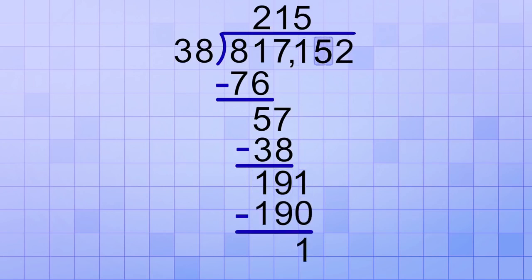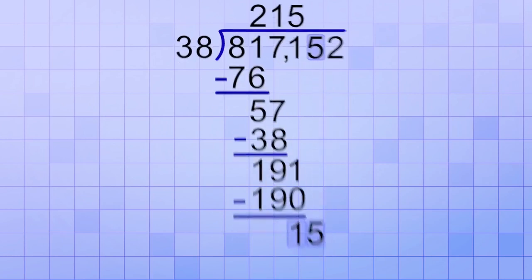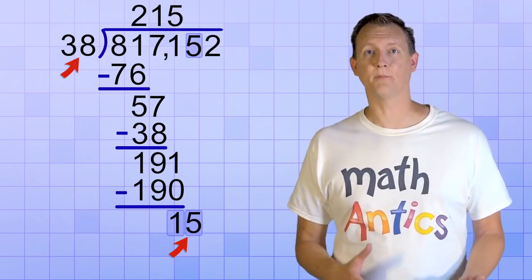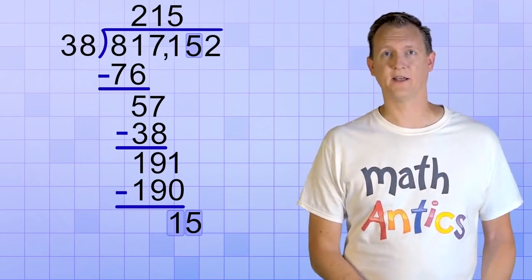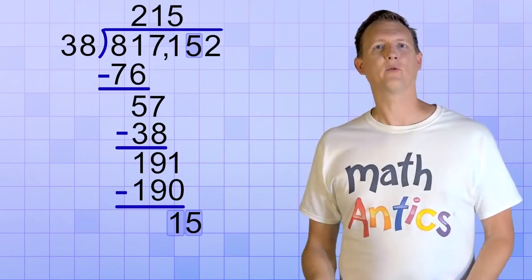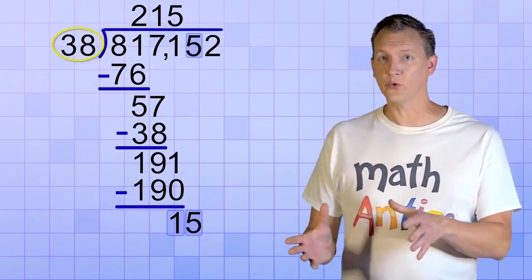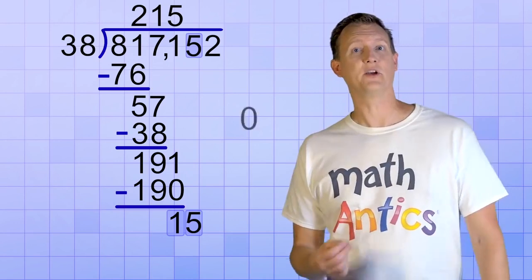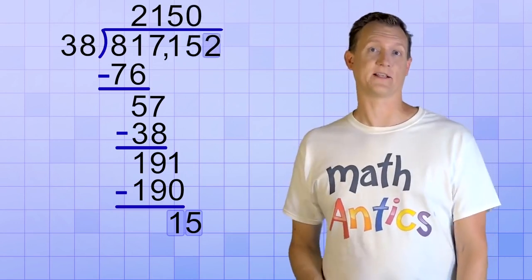Moving on, we bring down a copy of our next digit and ask, how many 38s will it take to make 15? Uh oh! 15 isn't big enough to be divided by 38. But don't worry, we already know what to do when this happens. Whenever we're trying to divide a bigger number into a smaller number, we just put a 0 in the answer line and move on to the next digit.